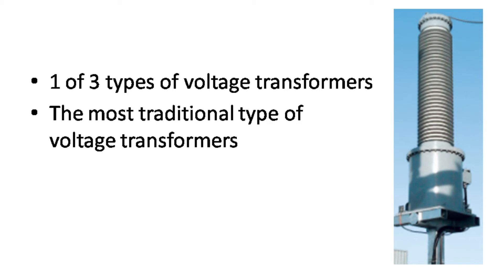The EMVT, or the Electromagnetic Voltage Transformers, is actually just the simplest type with the traditional core and windings of a traditional transformer. In the industry and the utility world, we're just referring to this as a VT or a PT, because this is basically the most common, normal type of voltage transformer that you will see out in the market.